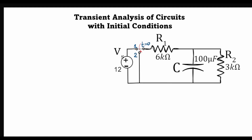the switch is moved from position 1 to position 2. We are interested in finding out the current through the resistor R2 — let's call it I2 — as a function of time once the circuit is switched. In order to proceed with this analysis, we will utilize the condition that